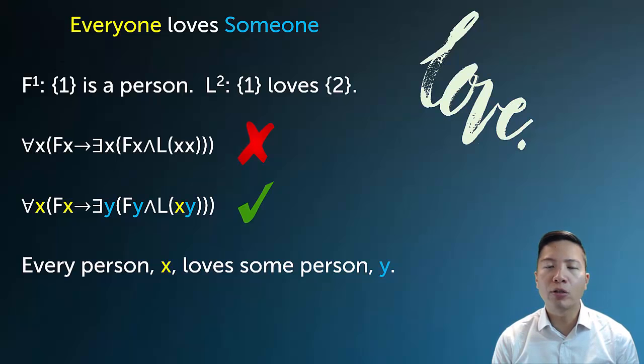So here, everyone loves someone, I start by introducing everyone for all XFX, and I invoke the canonical form of universal to get the conditional. Then I have the existential YFY for someone, and LXY. Every person X loves some person Y.